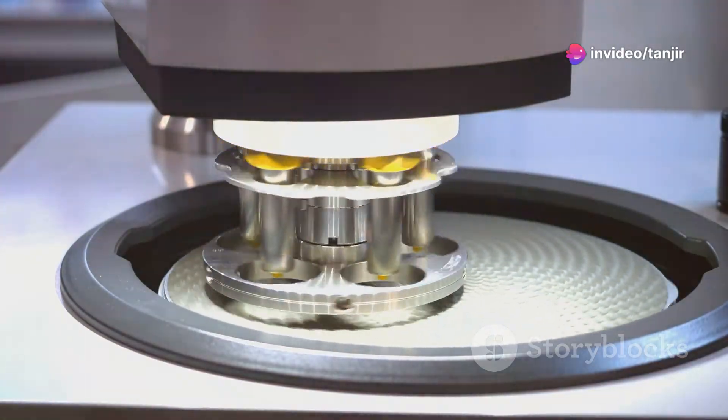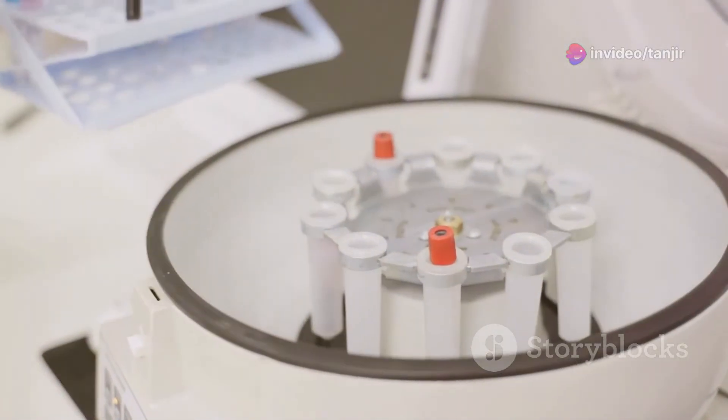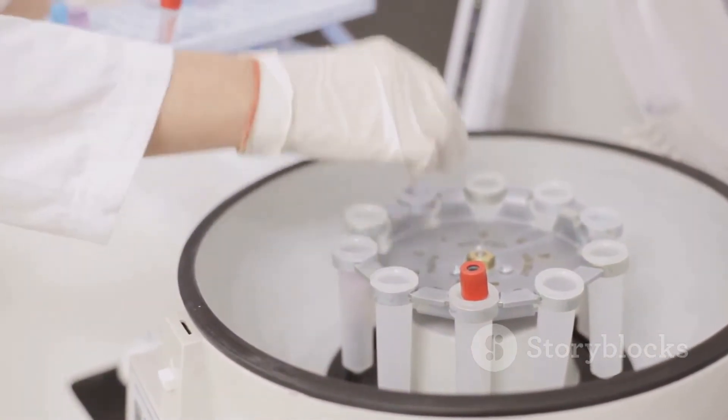By repeating this process in a series of centrifuges, called a cascade, we gradually increase the amount of U-235.